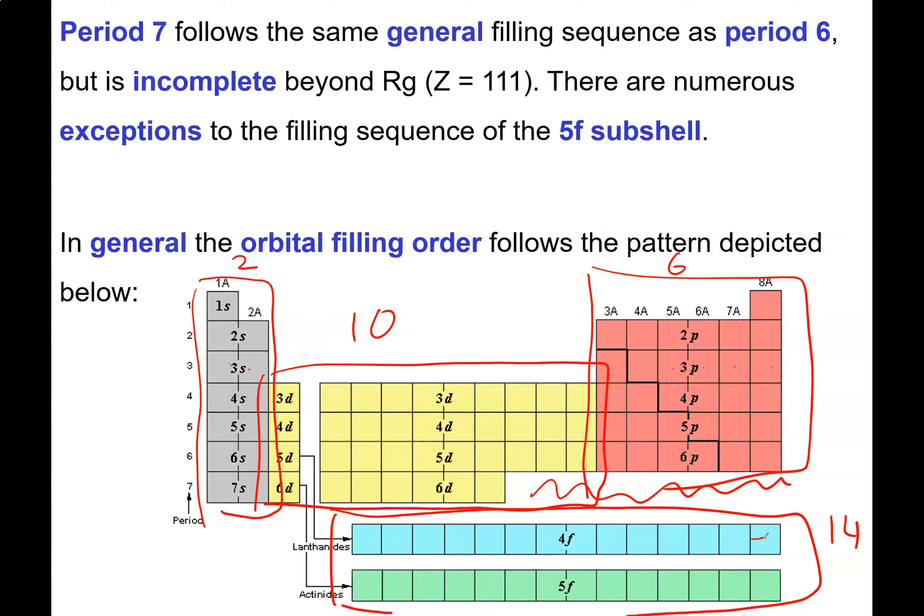You can actually use the periodic table to allow you to write out an electron configuration. You've just got to count it off, if you will, and follow where you are with respect to what we call the S, P, D, and F regions of the periodic table. This is another diagram that's worth keeping handy when you're trying to write out an electron configuration.